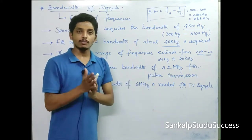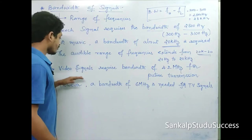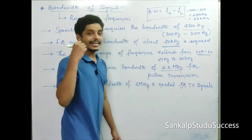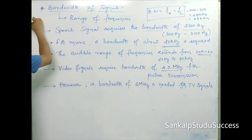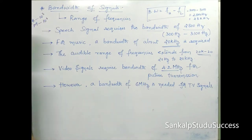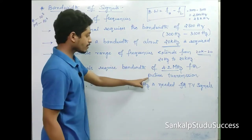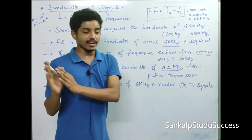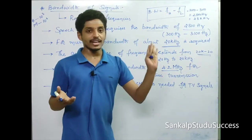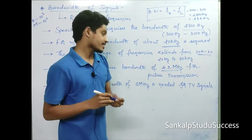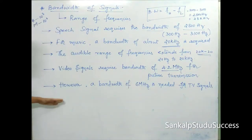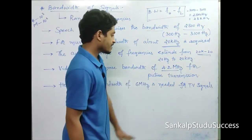For TV — if you want to watch video on a laptop or mobile phone — the video signal requires a bandwidth of 4.2 MHz for picture transmission. Mega is 10 to the power 6. Video is essentially multiple frames; one second contains 24 frames. However, a bandwidth of 6 MHz is needed for TV signals.